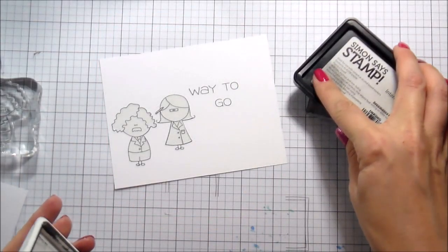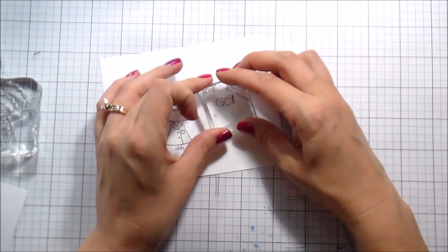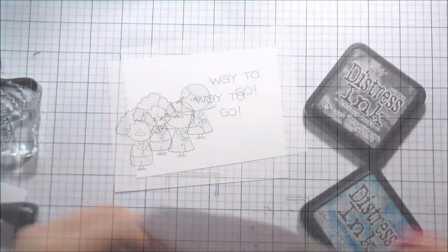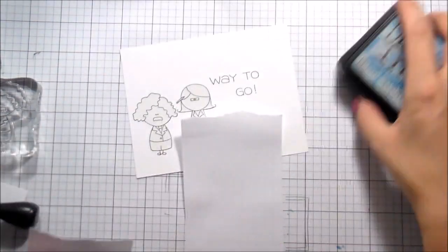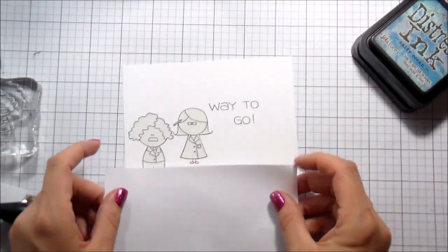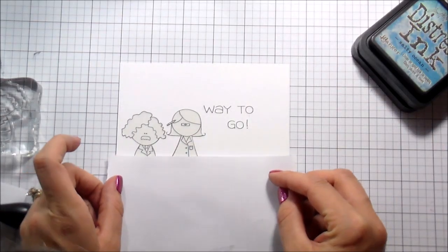So here I've got them stamped down their mast. And then I wanted to include this little exclamation point because I thought it was super cute, like really emphatic way to go. But it was kind of a pain to line up on my MISTI. So I just stamped it by itself.